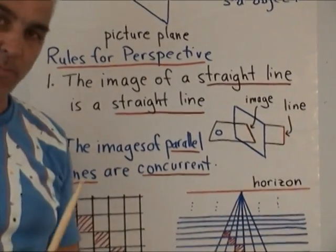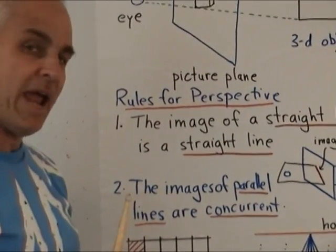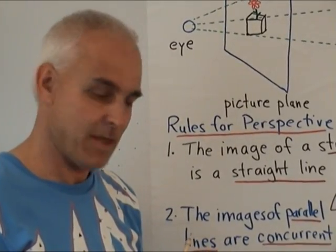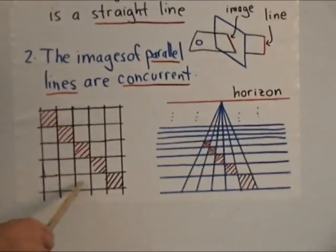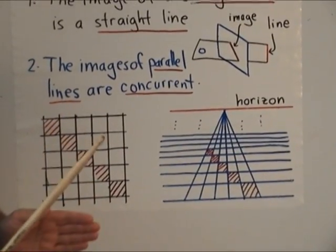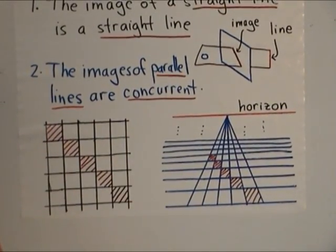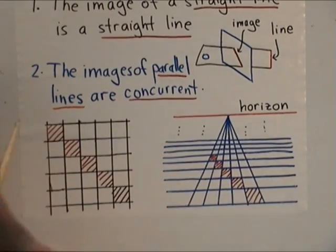The second principle is that the images of parallel lines are concurrent. And this arose in a very important standard problem of how to represent a square tiling, perhaps of a floor, in a perspective way.